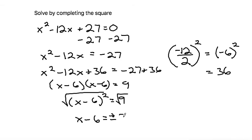The square root of 9 is 3, so it would be plus or minus 3. To finish, we add 6 to both sides to solve for x, which gives us x equals 6 plus or minus 3.